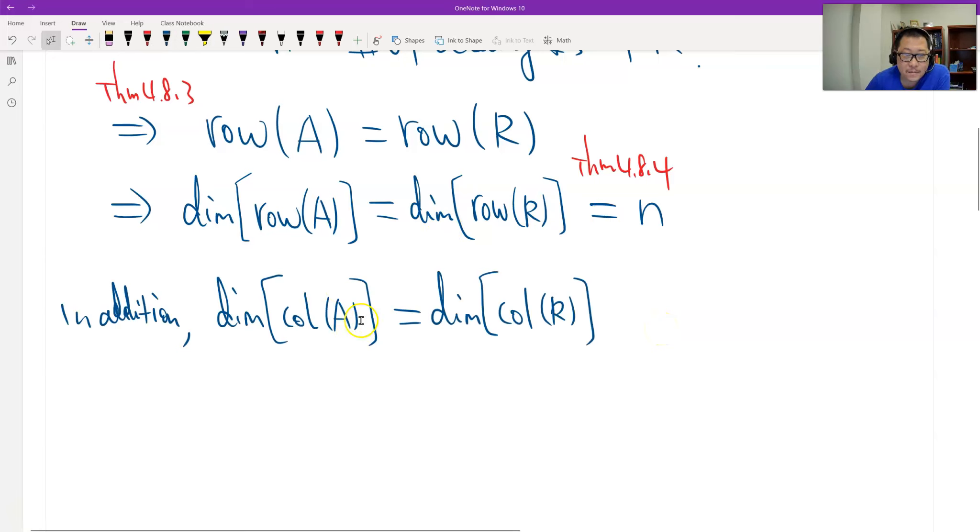Because A through row operation goes to R, therefore the column space will keep the same. That's the theorem 4.8.5. We do have the same result, which is n. And because of the theorem 4.8.4 already gave us, R is reduced row echelon. Therefore, the dimension of the column space exactly equals the number of the leading ones.